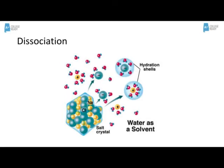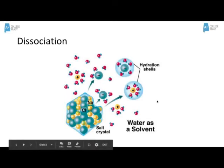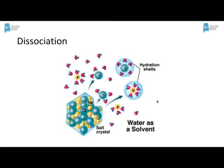We call this a hydration shell because water is the solvent. If water were not the solvent, then we would just call it a solvent shell — it's the same thing. Notice the sodium is positive, shown in yellow, and what surrounds the positive sodium are the negative ends of the water molecule. Remember, water is polar, so it has an end that's slightly positive where the hydrogens are, and slightly negative where the oxygen is. The slightly negative end of the water where the oxygen is, is attracted to the positive sodiums, and the slightly positive hydrogen ends are attracted to the negative chlorines. So they surround them and form a hydration shell.